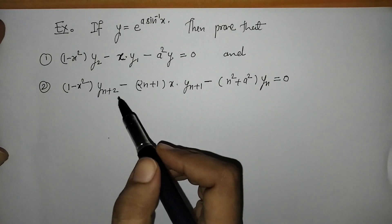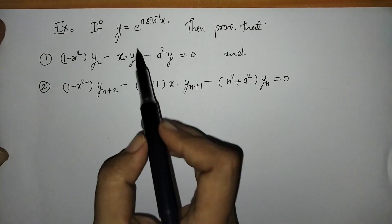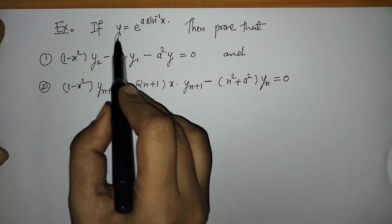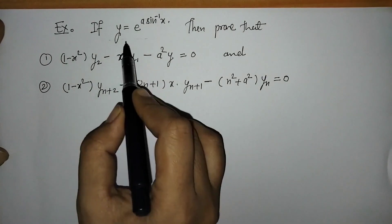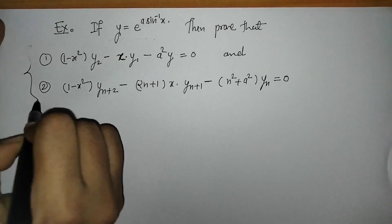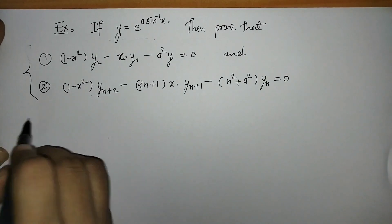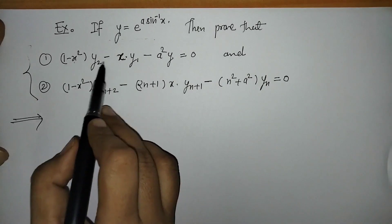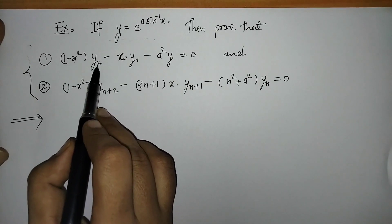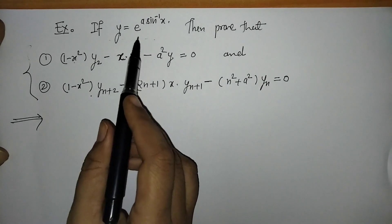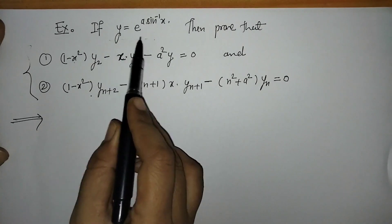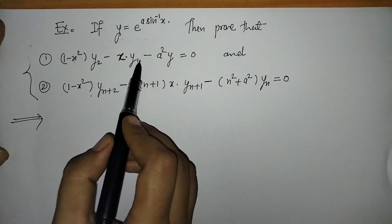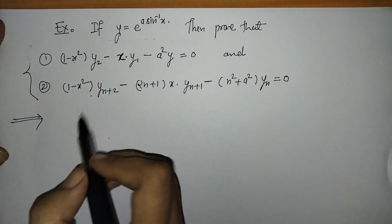Hello everyone, welcome to Unlock Maths. Today we have to solve this example. Here we have given this function y, and from this we have to find two expressions. We can check that in the first expression we have y2 and y1, which means we have to differentiate y to get y1 and y2 so that we will get the first expression.